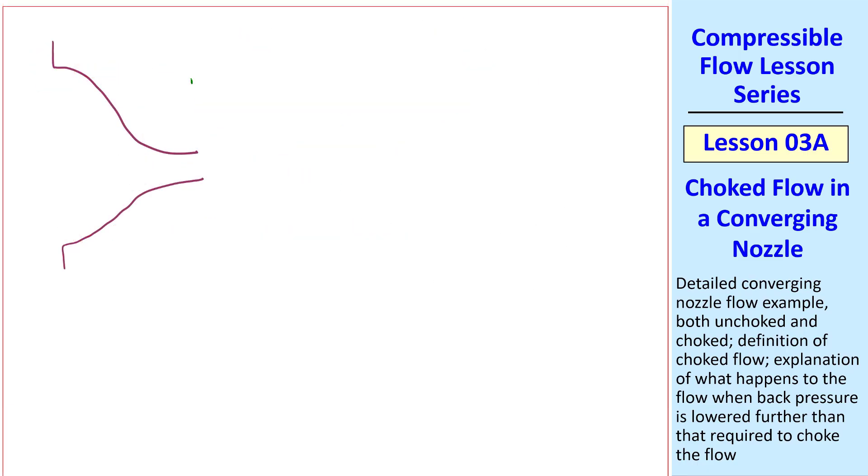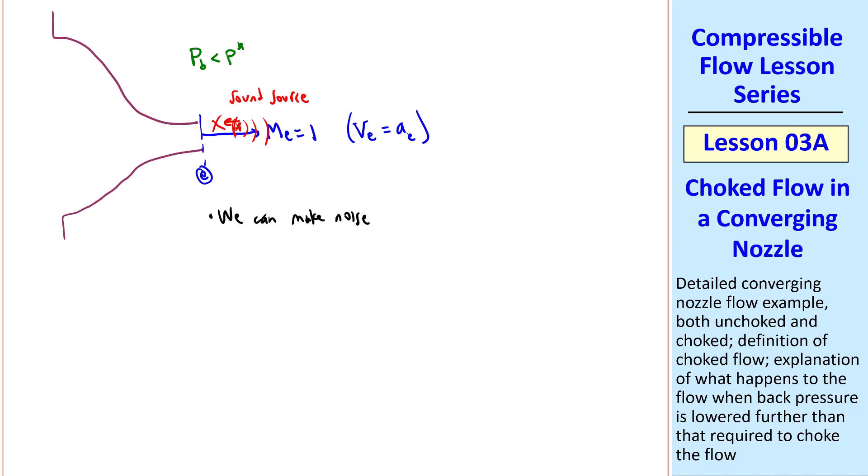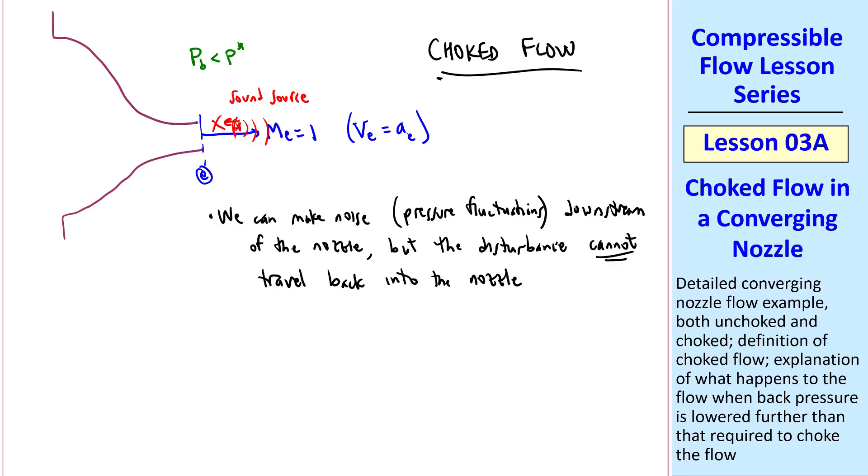What does this mean physically? Well, once we have this condition where Pb is less than P-star, the Mach number is 1 at the exit plane. V at the exit plane is equal to A at the exit plane, the speed of sound. We know that sound travels at, well, the speed of sound, and so if we make some kind of noise here, we have a sound source. The sound cannot penetrate upstream, although it can go downstream. If you had a microphone sitting here and you start making some sound, you would not hear it. By the way, a sound source is really pressure fluctuations. So I'll say that we can make noise or pressure fluctuations downstream of the nozzle, but the disturbance cannot travel back, meaning to the left, into the nozzle. This is another reason why we call this choked flow. In other words, nothing we do downstream will change the flow in the duct as long as Pb remains less than or equal to the critical value P-star and we have sonic flow at the exit plane.